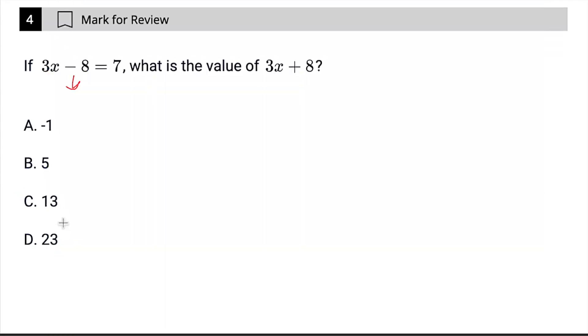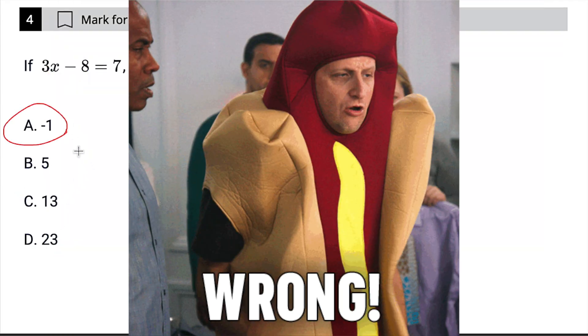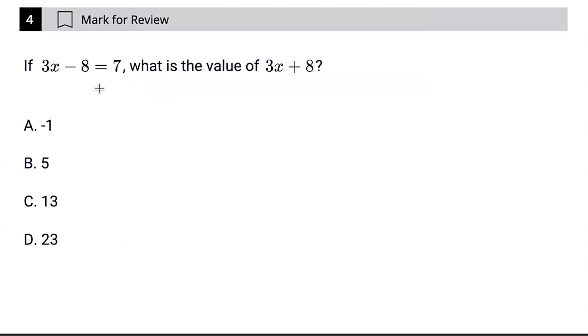Alternatively, you might think you need to subtract 8. Negative 1 is your wrong answer. But in fact, if you're going to get to plus 8 from negative 8, you would need to add 16. So 7 plus 16 is going to be 23, and that is the correct answer.